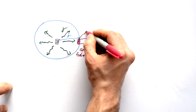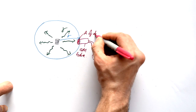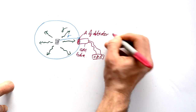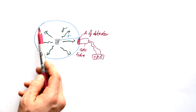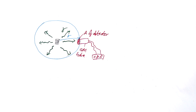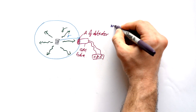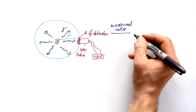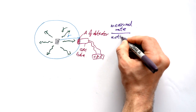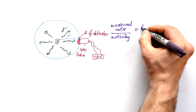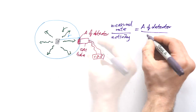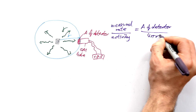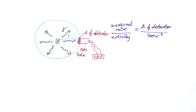We know the area of the detector. This area only covers a tiny bit of the imaginary sphere, but that's okay — the measured rate compared with the activity of the whole source is going to be the same as the area of the detector divided by the area of the whole imaginary sphere, which is 4πr². So we can roughly find out what the activity of a source is.